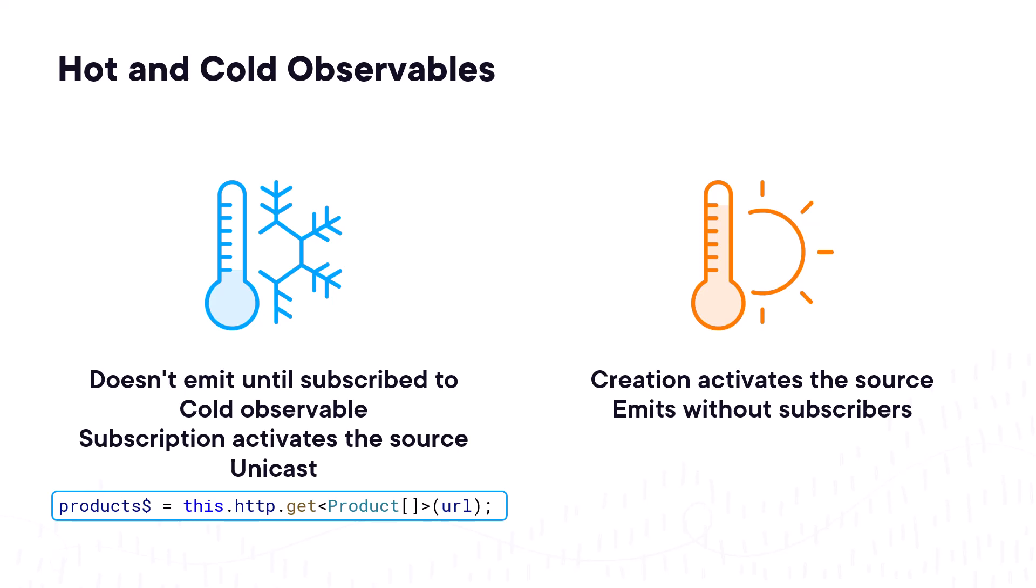When subscribed, the subscriber starts reacting to future emissions. This is often called a hot observable because it's already hard at work emitting items, potentially even before there are any subscriptions. Hot observables are normally multicast, meaning other subscribers share those emissions.